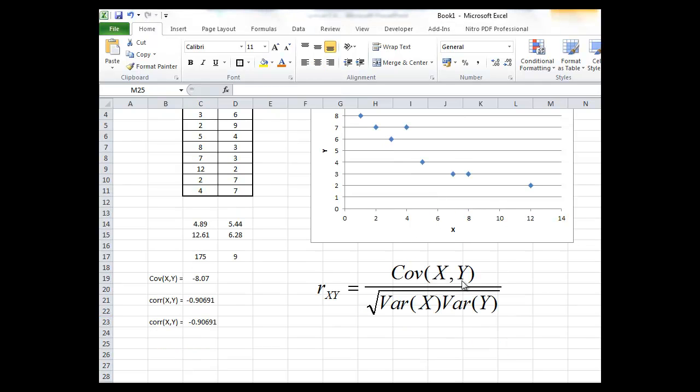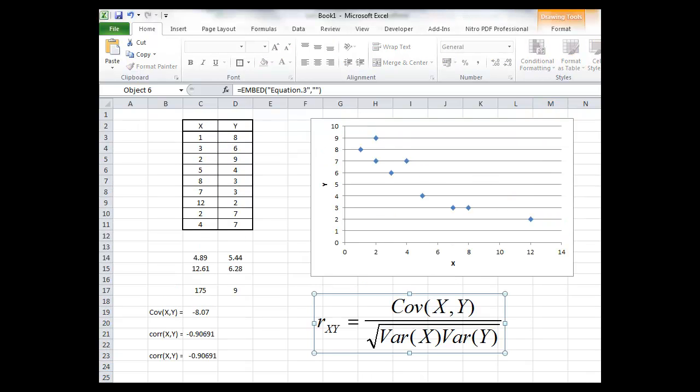We're now going to calculate the correlation coefficient from our data. So we're going to apply the formula shown here which is that the correlation coefficient between the random variables x and y is equal to their covariance divided by the square root of the variance of x times the variance of y. This will be a number that lies between minus 1 and plus 1.